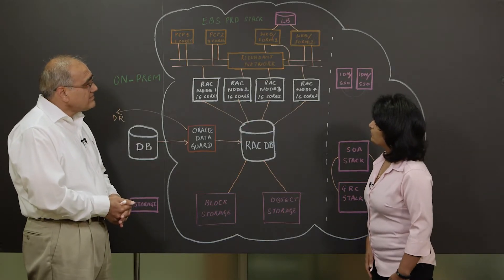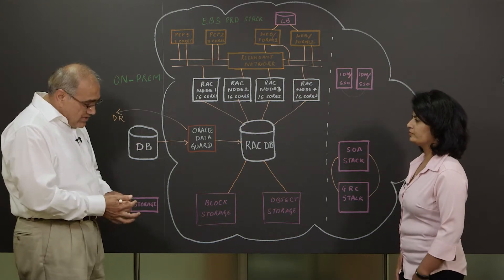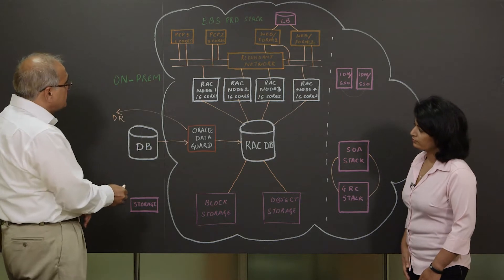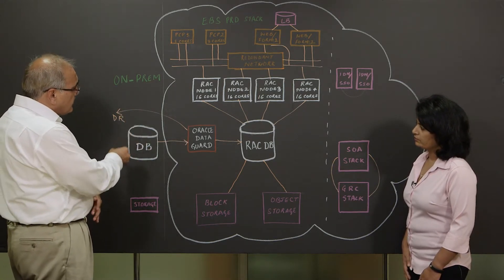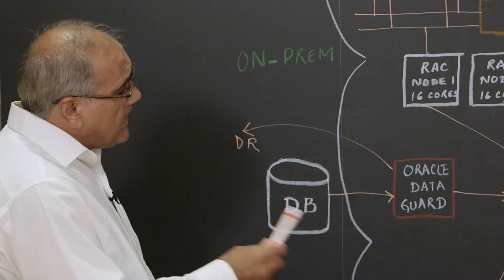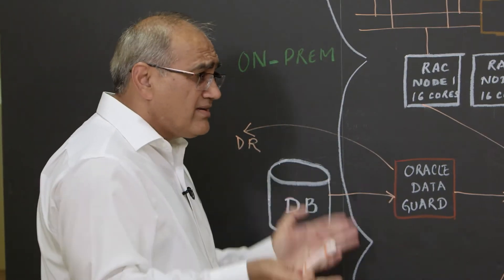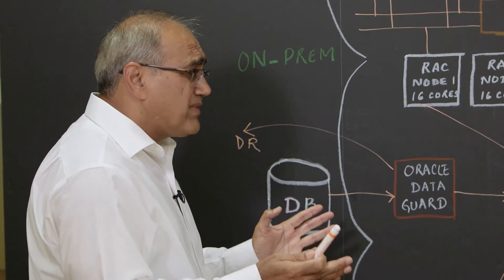So let's talk about this EBS deployment that we have over here. Walk us through this architecture please. We had an on-prem system for this customer which was not performing as desired. So we decided to take the whole system and lift and shift it into Oracle Cloud. For that we built a standard EBS architecture in the cloud using standard best practices.